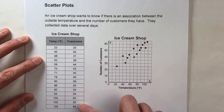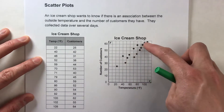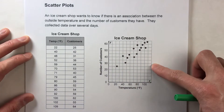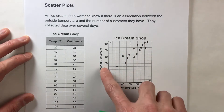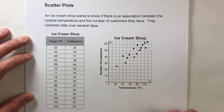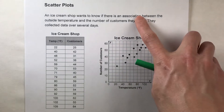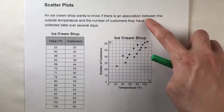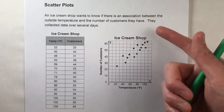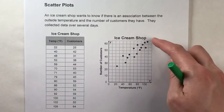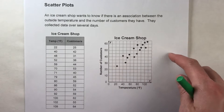I've taken all this data and plotted them as points on this scatter plot — temperature and customers. Now to see if there's an association, what we need to do is see if we can draw a trend line for this data.